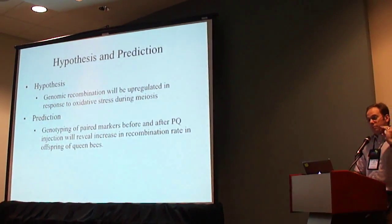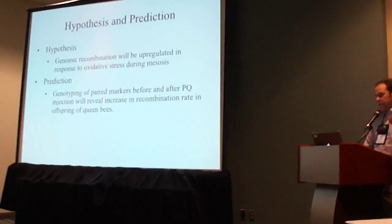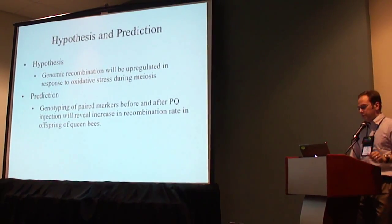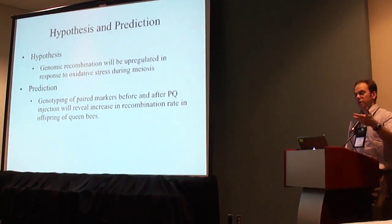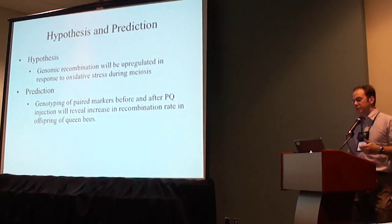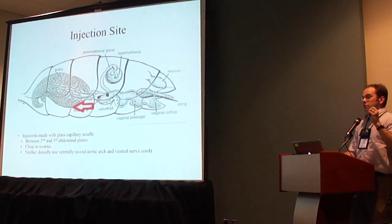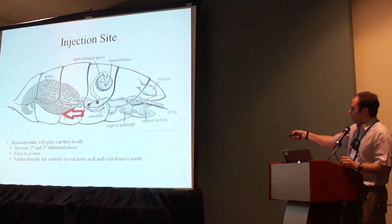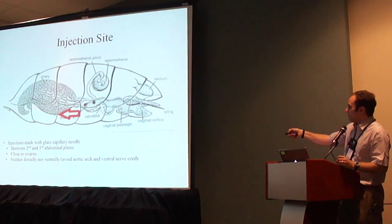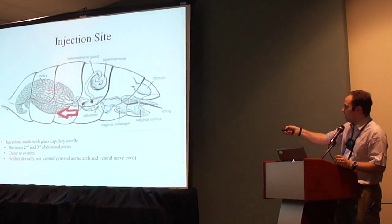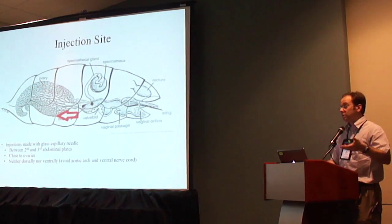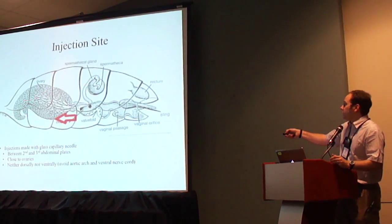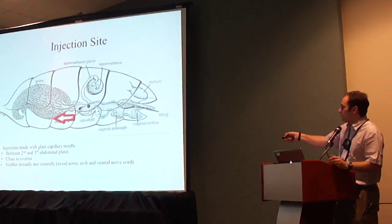My prediction is that if my hypothesis is true, then genotyping of paired markers before and after paraquat injection will reveal an increase in recombination rate in the offspring of the queen bees. I injected several queens between the second and third abdominal plates counting from anterior backwards, to get the paraquat right next to the ovaries — the site of meiosis in the queen bee — consistently on the left side, avoiding the aortic arch and the ventral nerve cord.